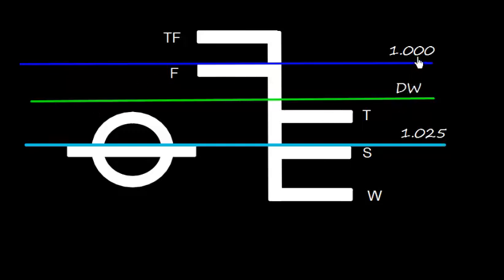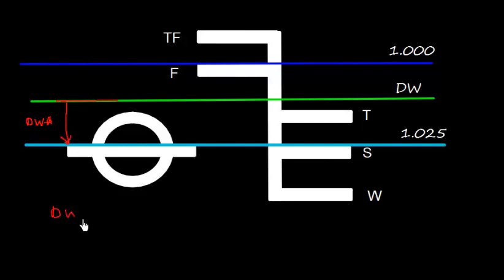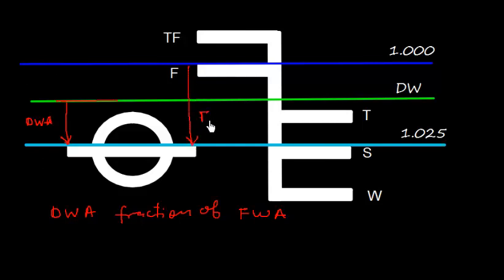Since dock water density is between 1 and 1.025, the density is somewhere in between. If the vessel was in dock water, she would be floating at the green line, and when she comes to salt water she rises to the S mark level. This distance is called dock water allowance. We can understand that dock water allowance is a fraction of fresh water allowance, because fresh water allowance spans the full range.